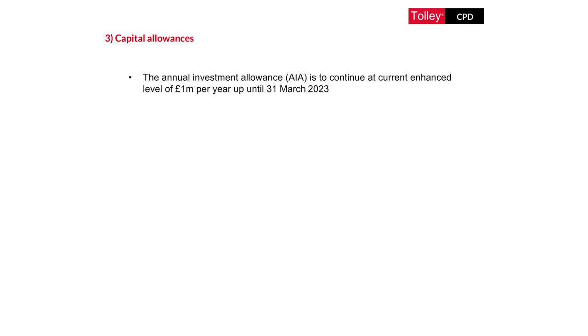There are one or two changes for capital allowances purposes. The Annual Investment Allowance is set at 200,000 pounds but has been at an increased rate of one million pounds for a couple of years. That one million pound extended AIA was due to end on the 31st of December 2021 but is now being extended to the 31st of March 2023, for both income tax and corporation tax purposes. As with all changes to AIA there will be normal transitional rules for accounting periods straddling the date of change.